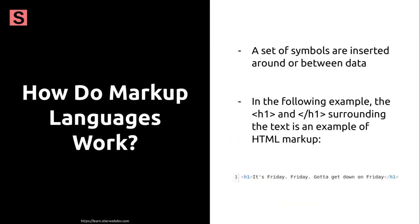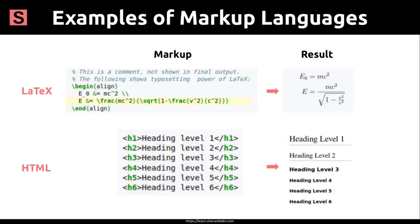So how do all these markup languages actually work? Well, we insert a set of symbols around or between data, and we did that already in Replit with our HTML. These symbols are going to vary depending on the markup language — they might be characters of the alphabet, digits, or non-alphabet, non-digit characters like the left arrow and the right arrow that we used with HTML. In the HTML example on this slide, we have the left arrow, the right arrow, the slash, and the h1 text between the left and right arrows.